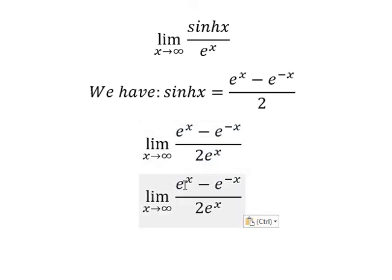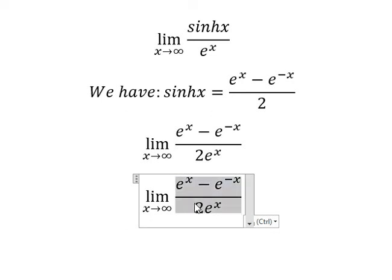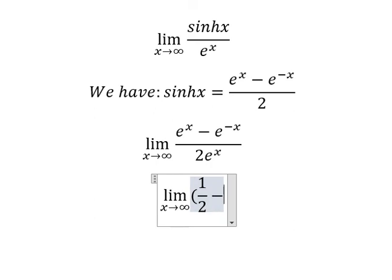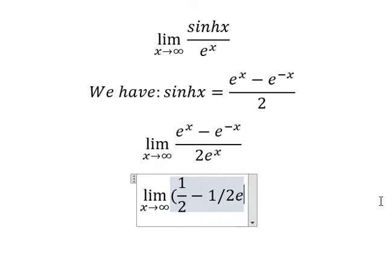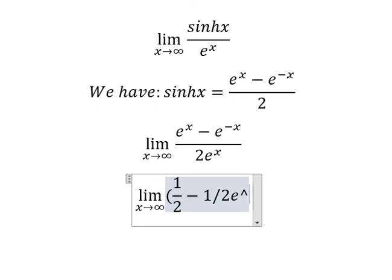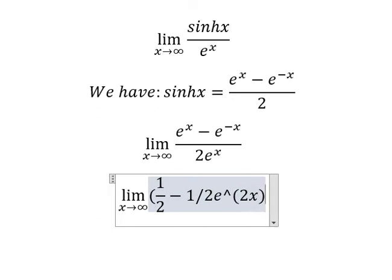Dividing this by this, we get one over two. Then dividing again, we have one over two times e to the power of two s.